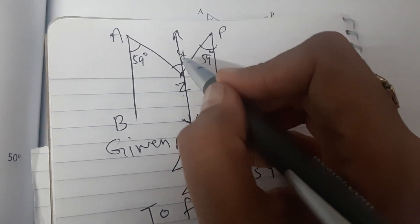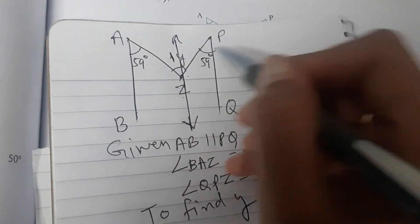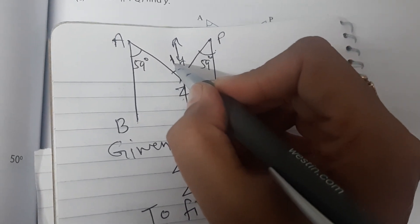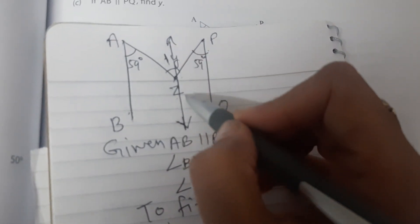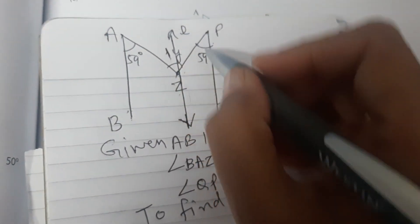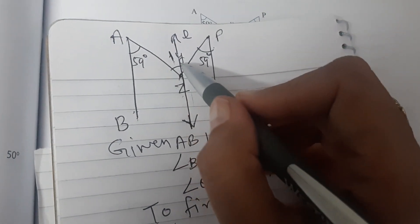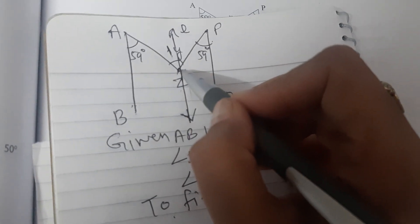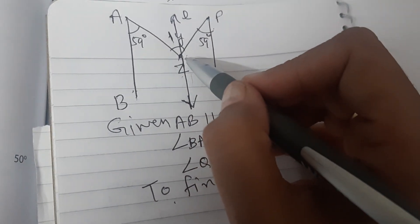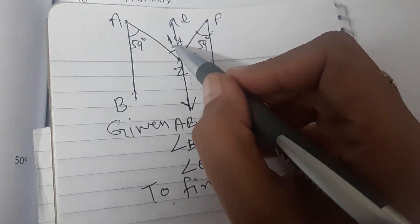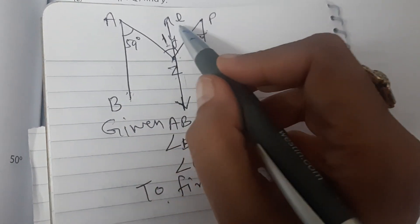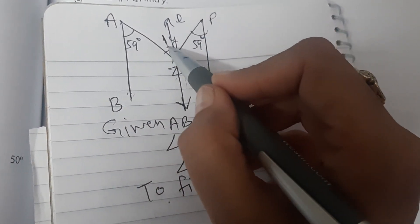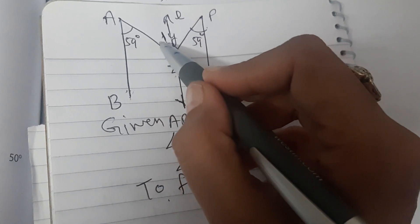Now you tell me, what will be the measure of angle 1? Line AB is parallel to line L and AZ is transversal. So what will be angle 1? Yes, you are right. Angle BAZ and angle 1, they are alternate interior angles.